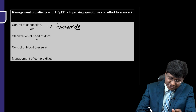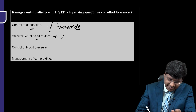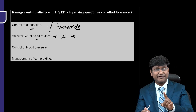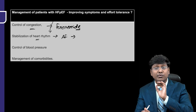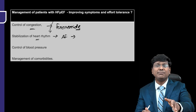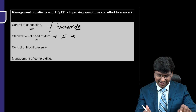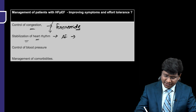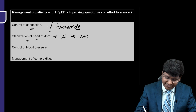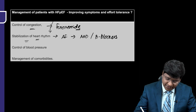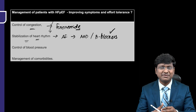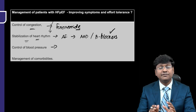Stabilization of heart rhythm is very important because patients with HFpEF have a chance of developing atrial fibrillation. Once the individual develops atrial fibrillation in HFpEF, the progression is going to be worse and there are also thromboembolic events. You can give anti-arrhythmic drugs, but preferably we give beta blockers, which are useful for both rate control and rhythm control.